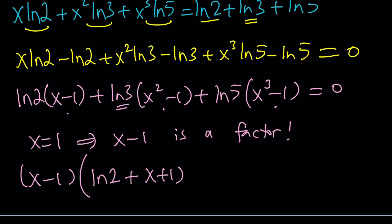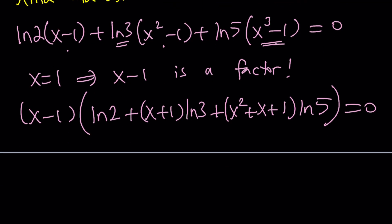And here, if you divide by x minus 1, you're going to get x squared plus x plus 1 from difference of 2 cubes. And that's multiplied by ln 5. Awesome. So, you get to see that this is 0 when x equals 1. So, we're good on that.